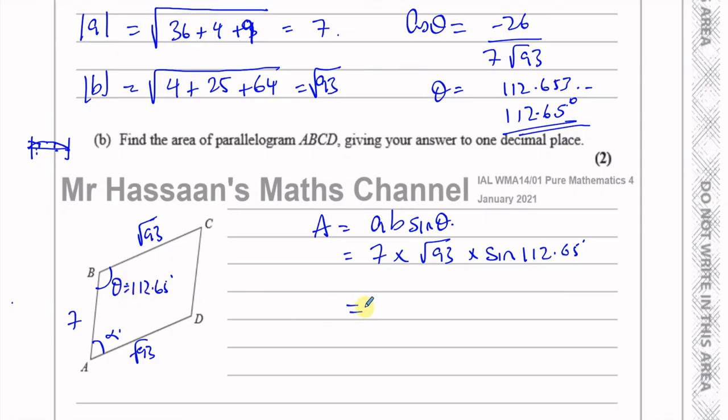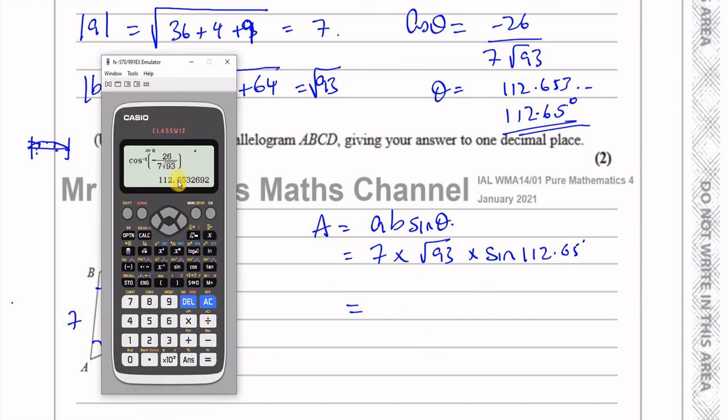So that it does fit in even though you might think it doesn't in the beginning. Anyway, we're going to put this in our calculator. I need the sine of this angle, so I'll put sine of my answer, equals, multiplied by 7 times the square root of 93.